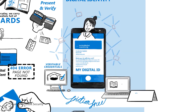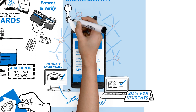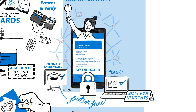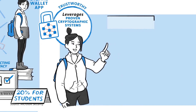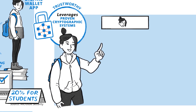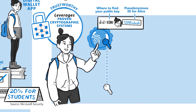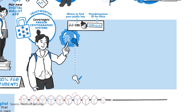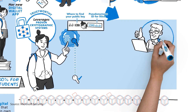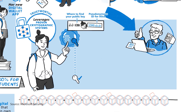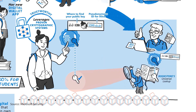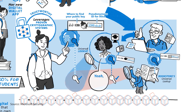Each time you use your SSI to verify yourself online, you are using your digital wallet to share your identity, minimizing security risk, as it eliminates the need to store or upload your personal information on various websites or service databases. SSIs grant you complete control of your digital identity, making you a self-sovereign individual.